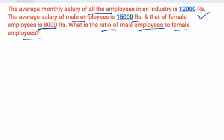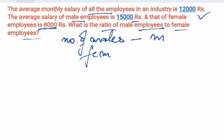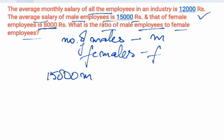We will solve this question by two methods. First, the normal method. Let the number of males be M and females in the industry be F. The average salary of male employees is 15,000, so the total salary that male employees are getting is the average salary multiplied by the number of male employees.